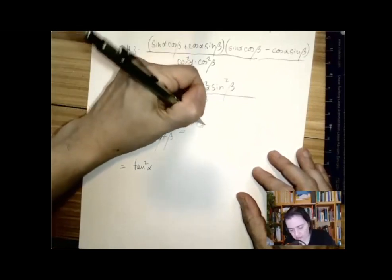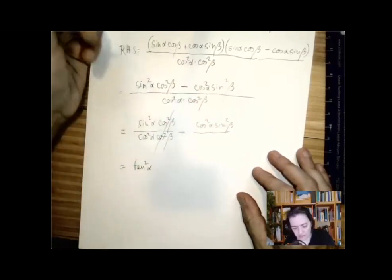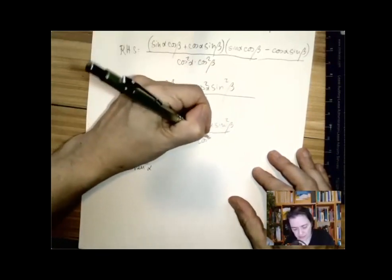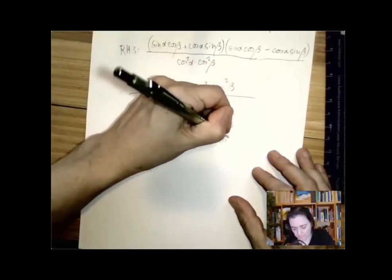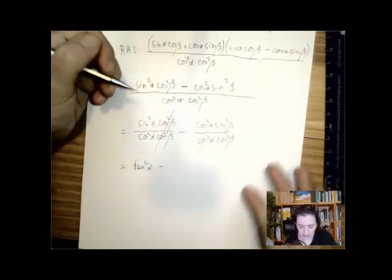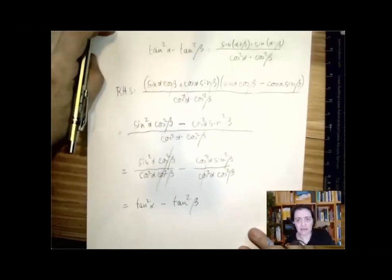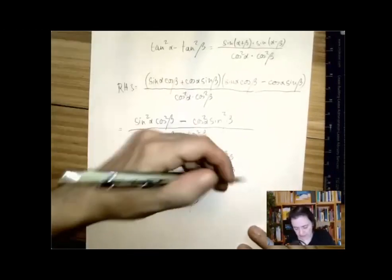minus cosine squared alpha sine squared beta, divided by cosine squared alpha cosine squared beta. Where cosine squared alpha cancels, and sine squared beta over cosine squared beta is tangent squared beta. And that's the left-hand side.